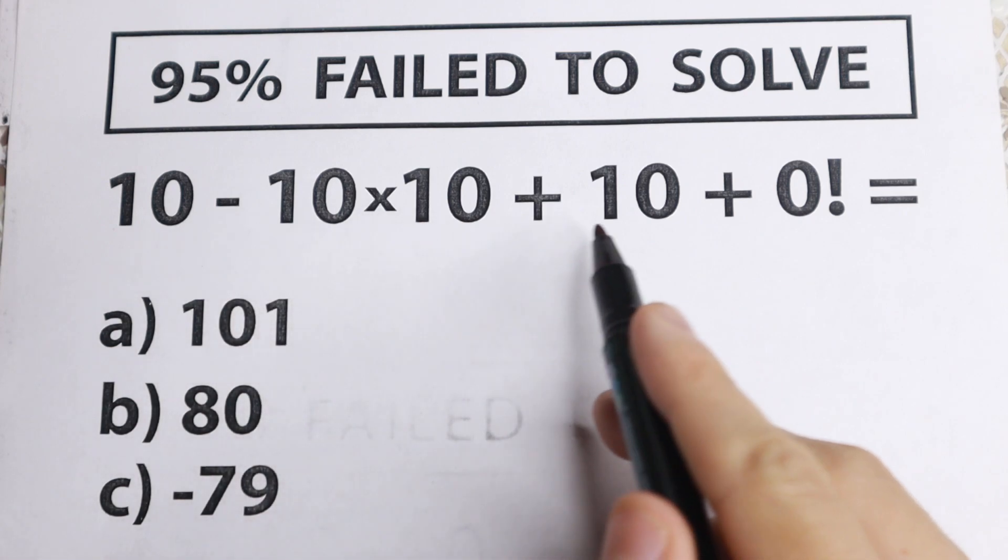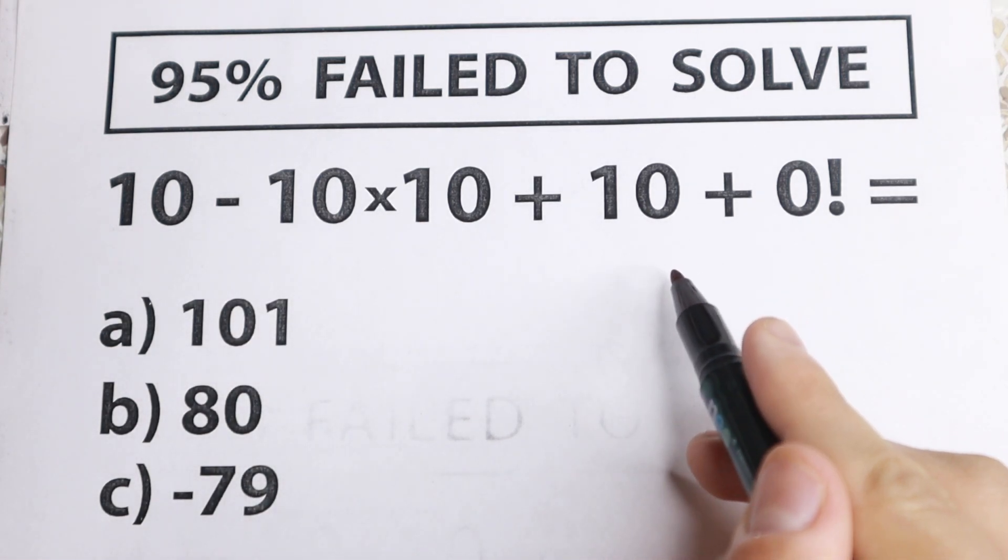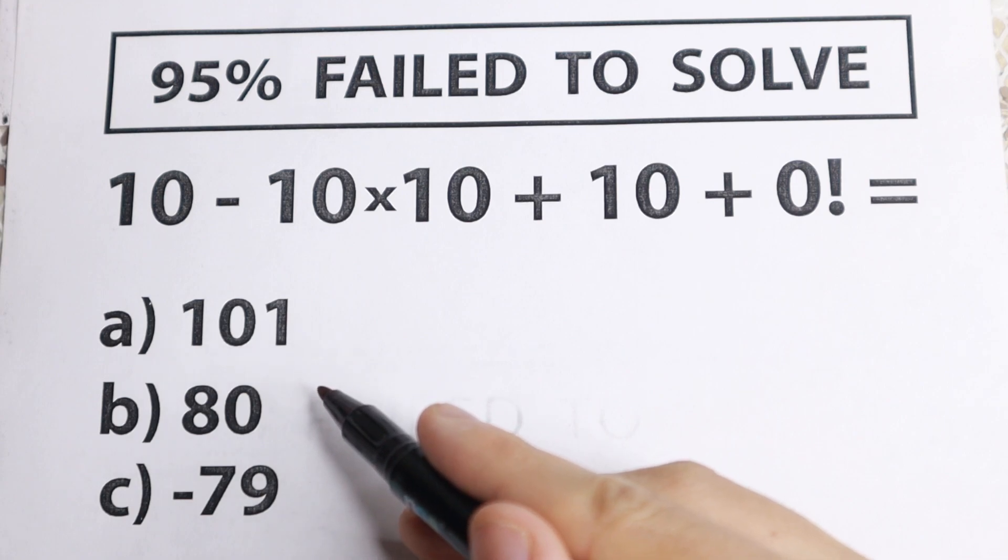We have 10 minus 10 times 10 plus 10 and plus 0 factorial. Right here we have a lot of options: a, b, c, and d.